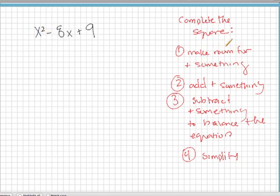So what we're going to do to complete the square, step number one is we're going to make room for plus something. So I'm going to have x² minus 8x plus something and then my number is just kind of hanging out over here.